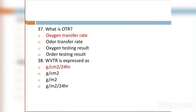MCQ 38: WVTR is expressed as: Option A: gram per centimeter square per 24 hours. Option B: gram per centimeter cube. Option C: gram per meter square. Option D: gram per meter square per 24 hours. Option A, gram per centimeter square per 24 hours, is the right answer.